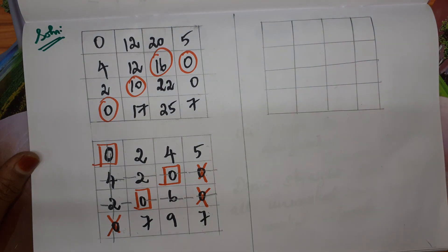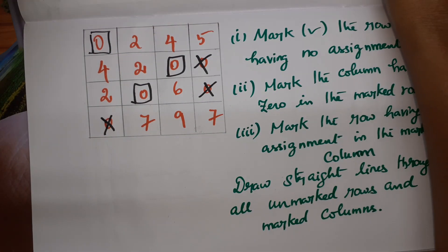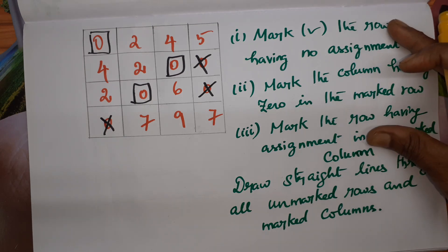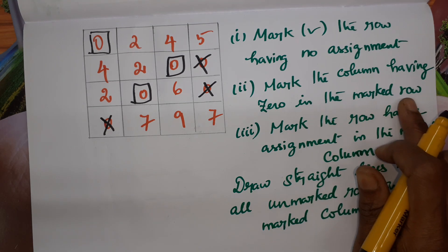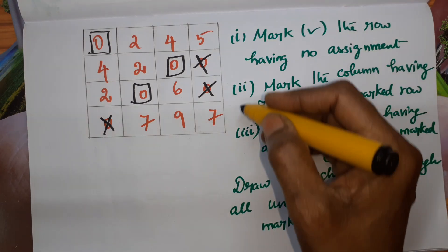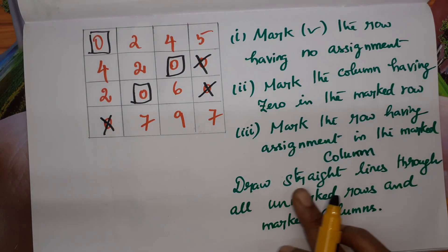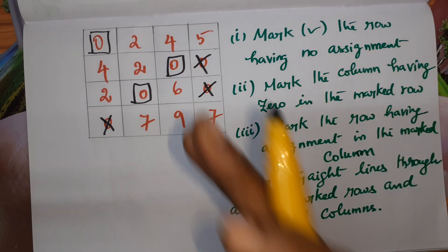I will teach you one more procedure to draw straight lines — the same matrix is used. For this method, there are three conditions. First, mark the row having no assignment. Second, mark the column having 0 in the marked row. Third, mark the row having an assignment in the marked column. Repeat these three conditions until done, then draw straight lines through all unmarked rows and marked columns.